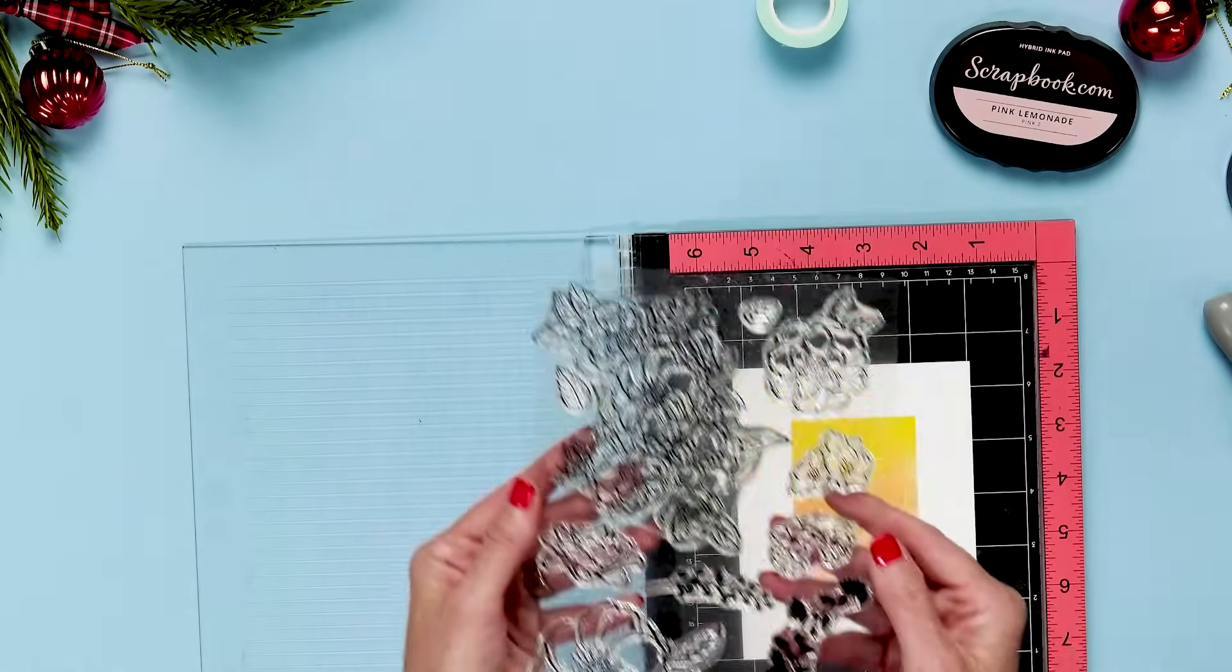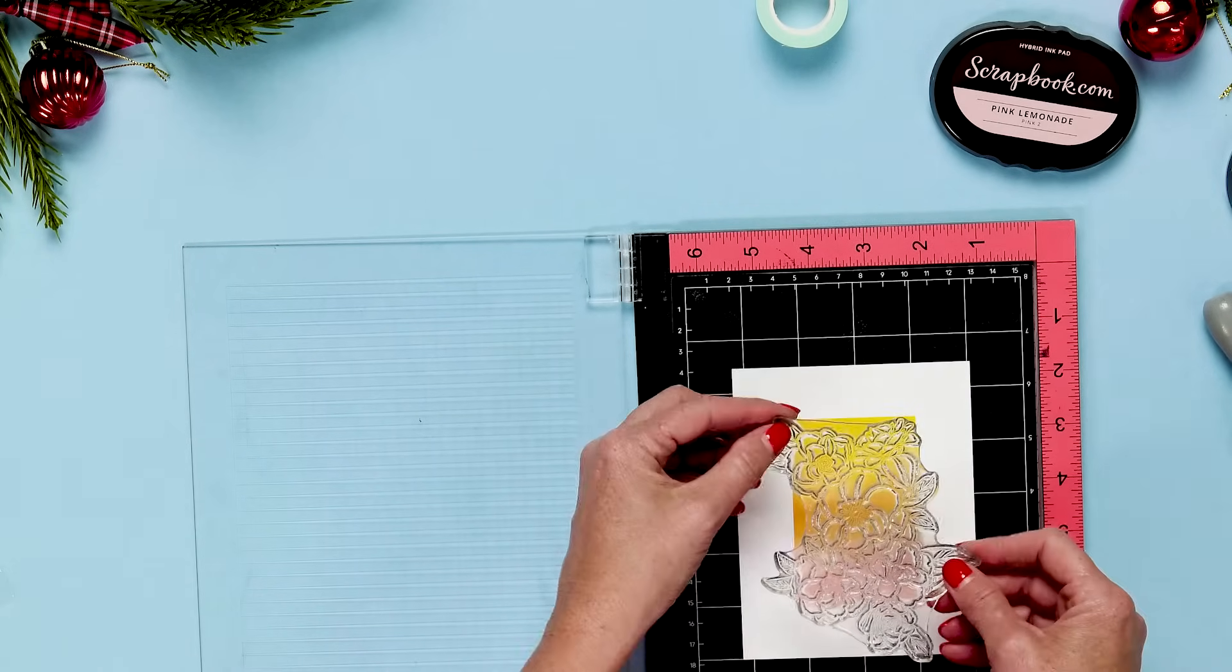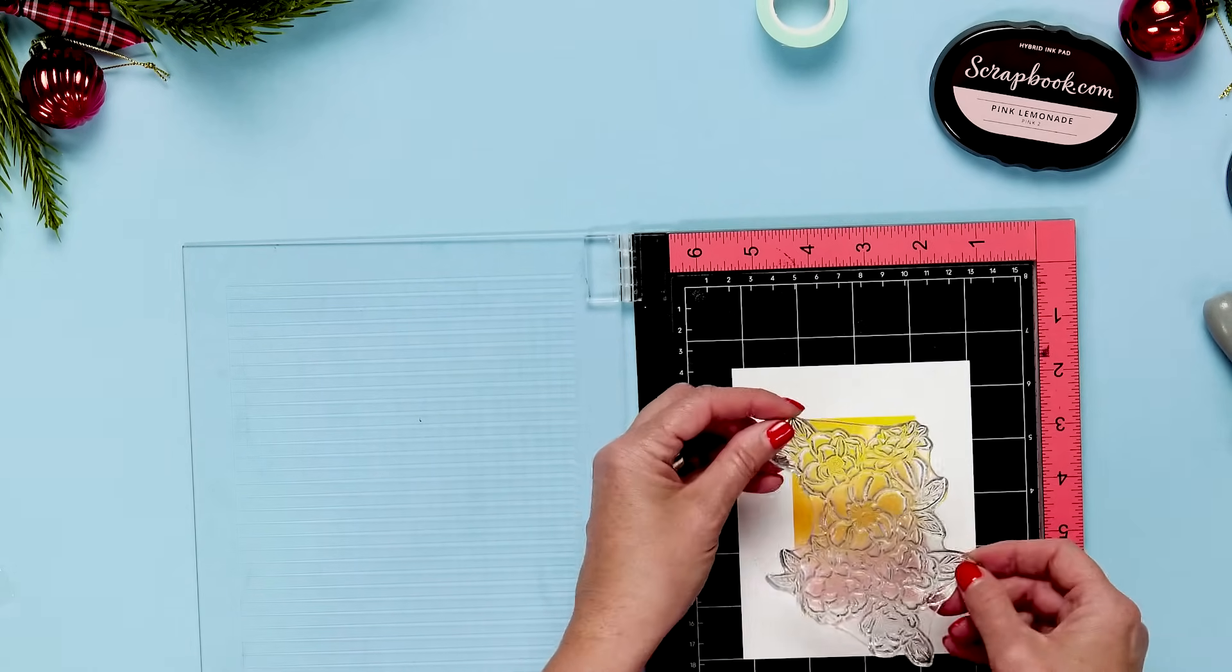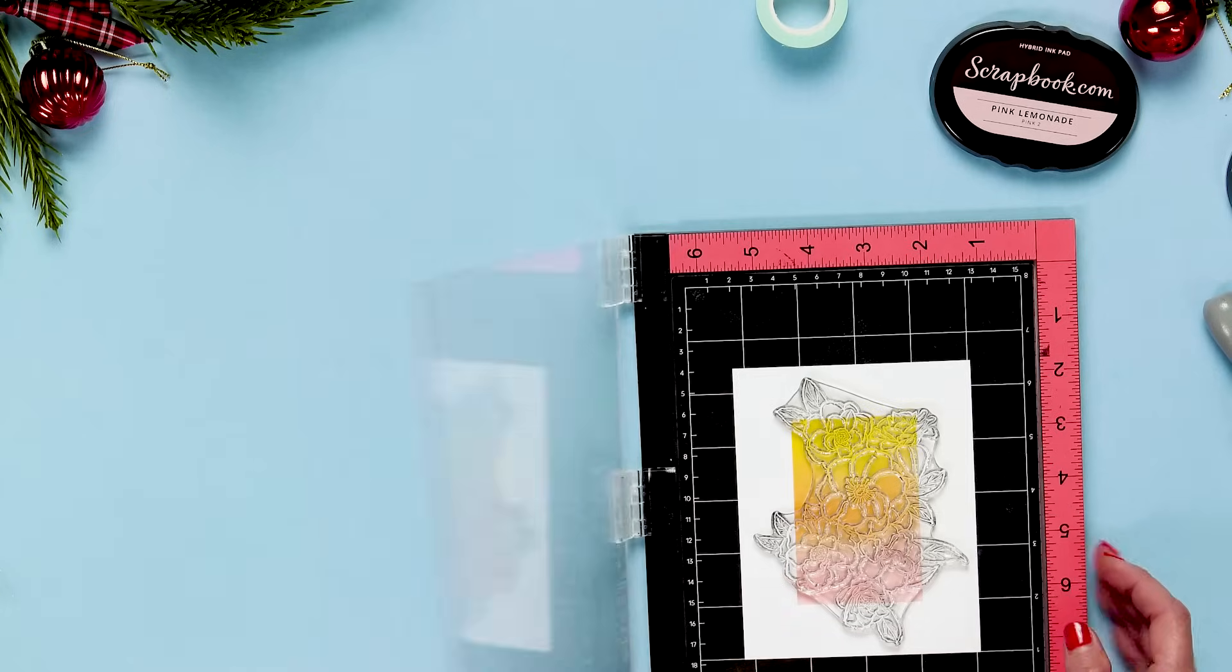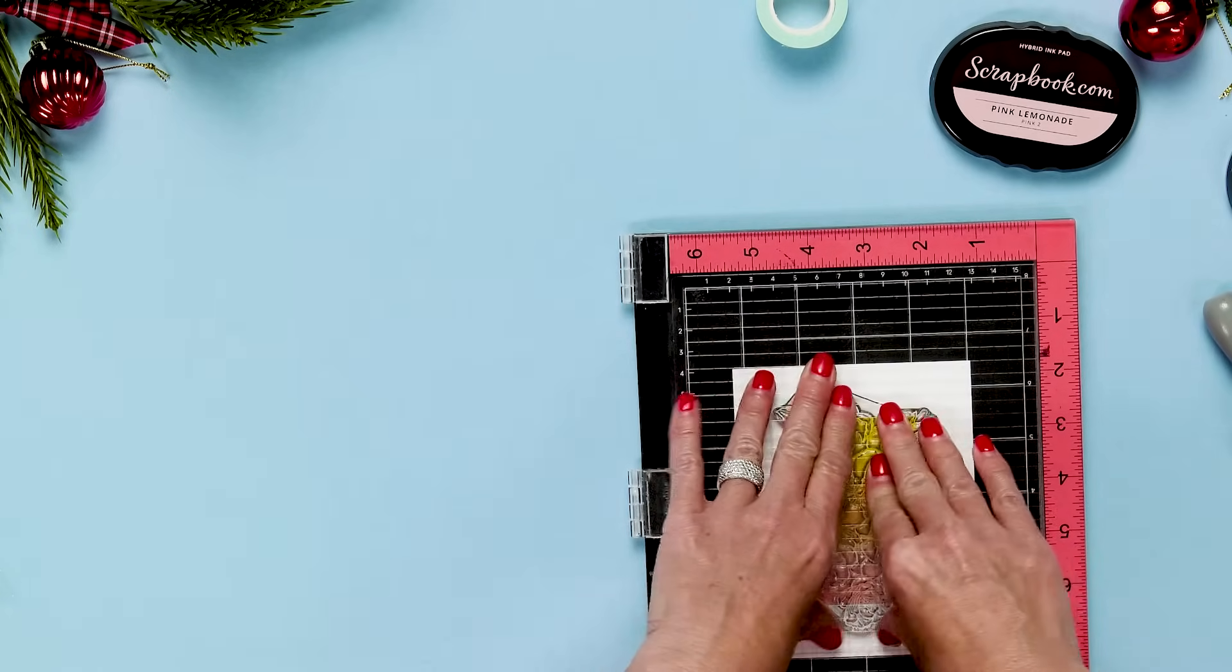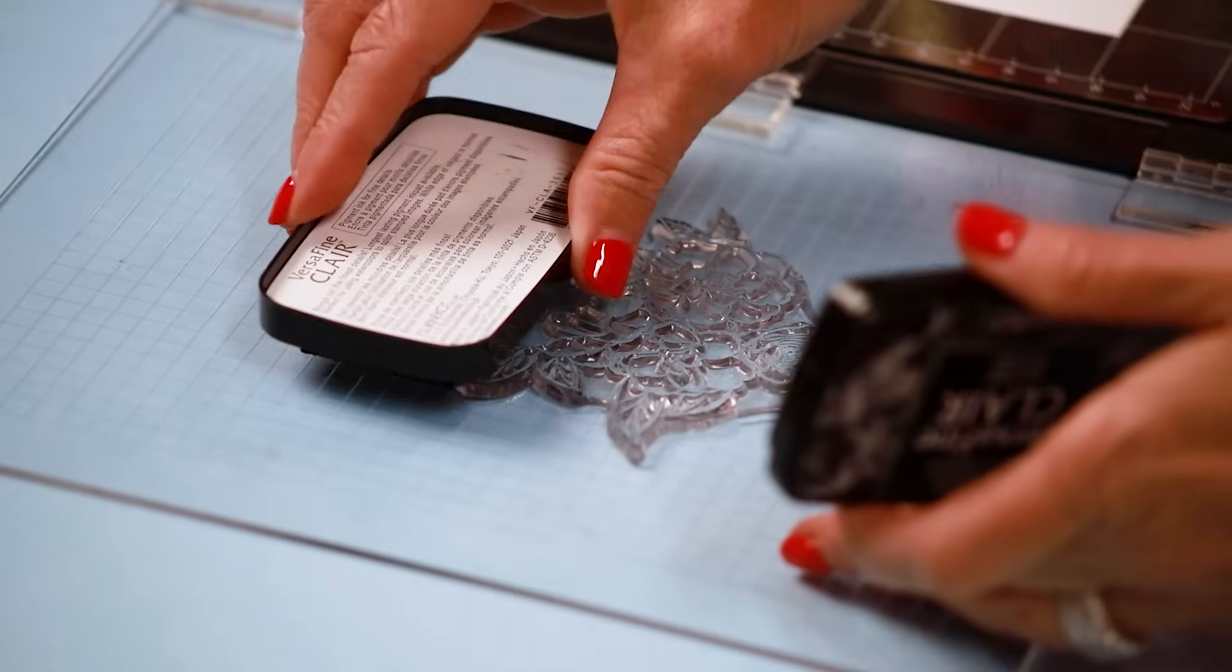Now we're going to take this really pretty floral and I want it to kind of cascade down to here. Then we're going to use our MISTI to grab it and then I'm going to ink up this really pretty floral.